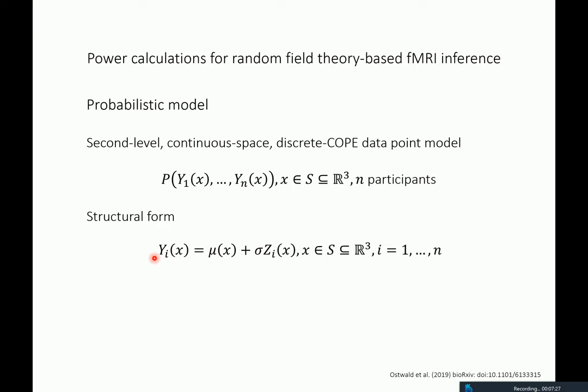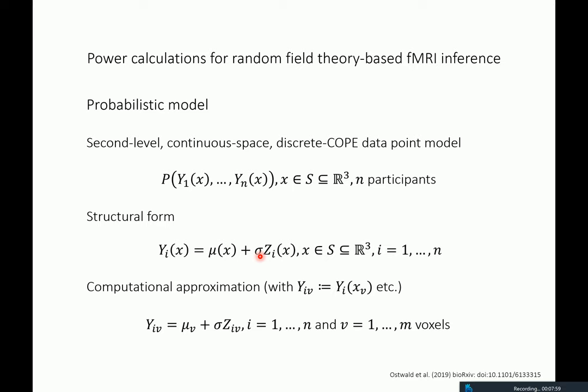In structural form, this model can be expressed as follows. The observation of the i-th participant at location x in 3D space is given by the value of a mean or expectation function that is 1 for all participants, but the i-th participant is realized by adding to this mean function a z random field weighted by some standard deviation parameter. In the computational approximation, we don't observe these models everywhere in space, but at the voxel locations — yielding the familiar data matrix of n voxels and n participants from fMRI analysis.